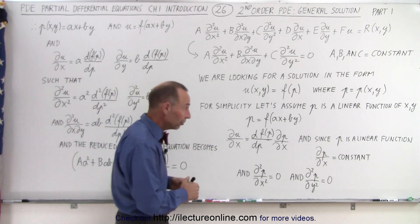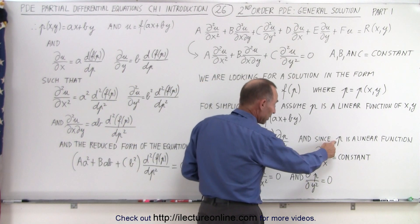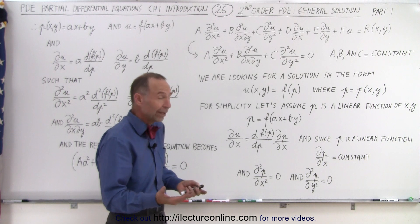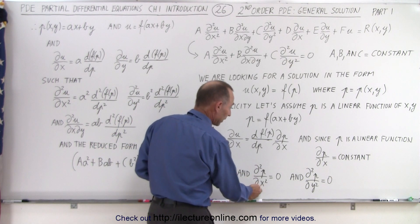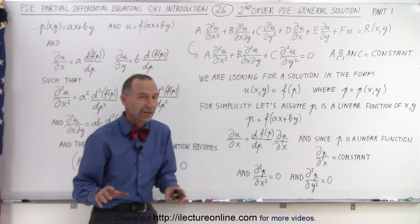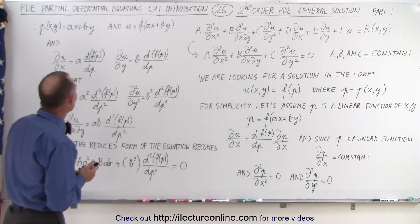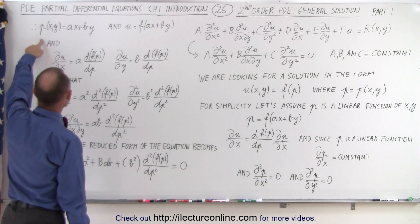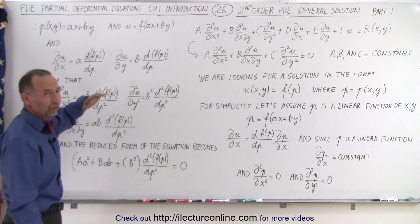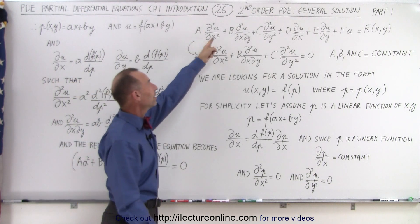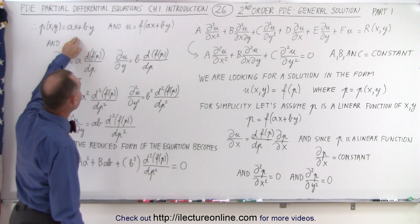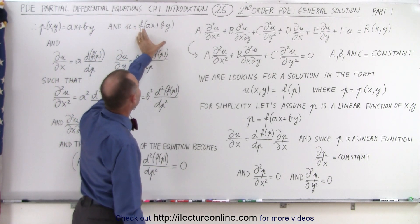As a result, we know that if we take the partial derivative of p with respect to x, that will be a constant, and the partial of p with respect to y will also be a constant. And if we take the second partial derivative of p with respect to x, that will be zero, and the second partial derivative of p with respect to y will be zero as well. So that's why things are simplified. We can say that p will be ax plus by, which is a linear function of x and y, where a and b are constants — noting these small a and b are not the same as the equation coefficients — and u will be a function of that function.